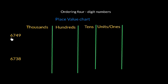In this case we've got 6749 and 6738, so we're going to see what happens when we've got the first two digits being the same. 6749 has six sets of a thousand, seven sets of a hundred, four sets of ten, and nine units. 6738 has six sets of a thousand, seven sets of a hundred, three sets of ten, and eight units.